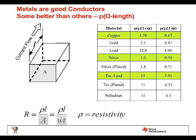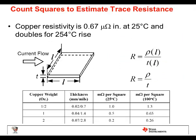Since resistivity is in the numerator and we want small resistance, we want a small rho value. Silver is the lowest in the table, but it's expensive; copper is close behind, so we use copper. Lead solder is about 10 times more resistive. To estimate copper resistance, we break a trace into squares — for a 100 mil wide by 1 inch long trace there are 10 squares. The L's cancel in the formula and resistance equals rho over T.